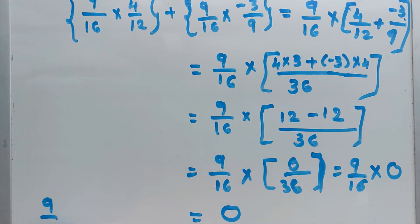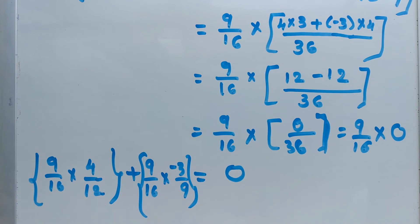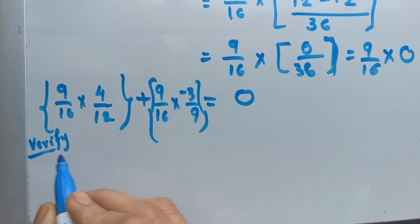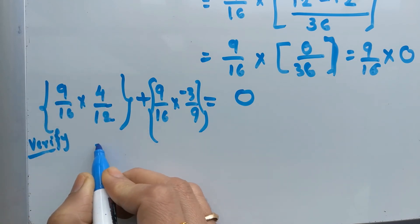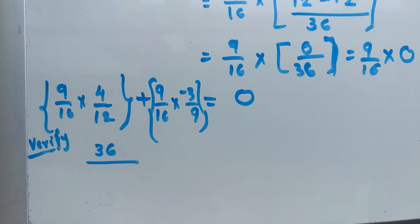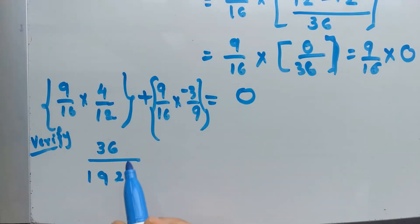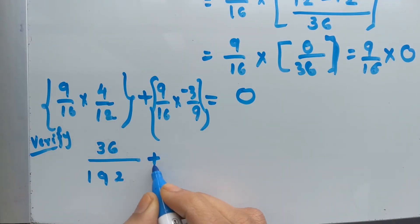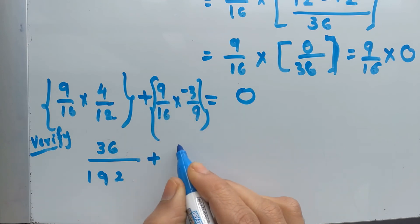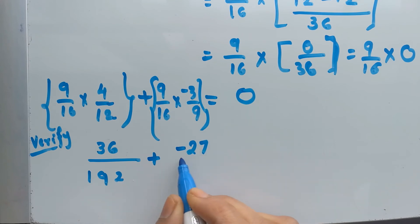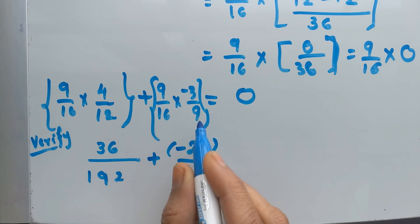We can verify the answer by direct multiplication. First: 9 times 4 is 36, and 16 times 12 is 192, giving 36 over 192. Second: 9 times negative 3 is negative 27, and 16 times 9 is 144, giving negative 27 over 144. Now we add 36 over 192 plus negative 27 over 144.